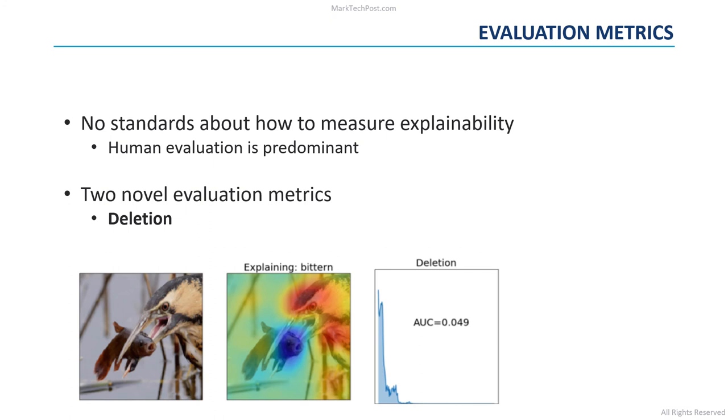Clearly, the importance of the pixels is given by the output saliency map of RISE. We have a good explanation when we obtain a sharp drop, so a low area under the probability curve.